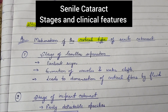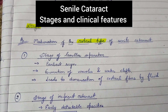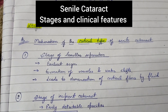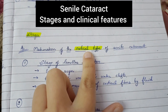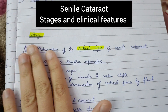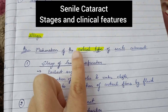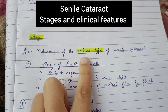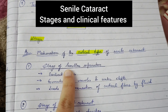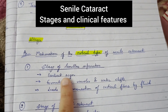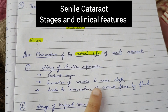In this lecture we will discuss senile cataract, its stages, signs and symptoms. First we will talk about maturation of cortical type. There are two types of maturation: cortical type and nuclear type. There are five stages of cortical type senile cataract. The first stage is the stage of lamellar separation, which is the earliest sign. In this stage there is formation of vacuoles and water clefts, leading to demarcation of cortical fibers by fluids.